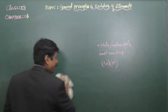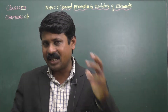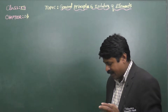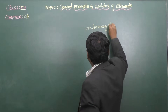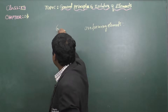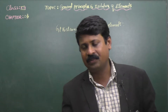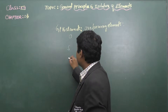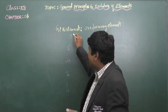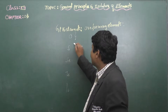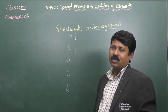Group 16 elements are called chalcogens, a term derived from ore-forming elements. Ore-forming elements under group 16 are oxygen, sulfur, selenium, tellurium, and polonium. Metallic ores are either in the form of oxides, sulfides, sulfates, or combinations of sulfur and oxygen, which is why group 16 elements are called chalcogens or ore-forming elements.